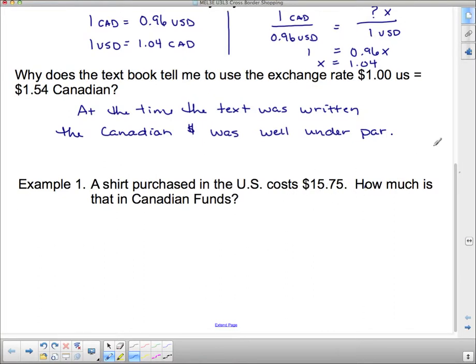So, let's have a look. This isn't a large ticket item. It's only $15.75. We're going to use this conversion rate, and it doesn't matter which one of these I use, whether it's 1 Canadian dollar versus 1 US dollar, we're going to set it up like a proportion either way. So, let's use the first one. 1 Canadian dollar equals 0.96 US dollars.